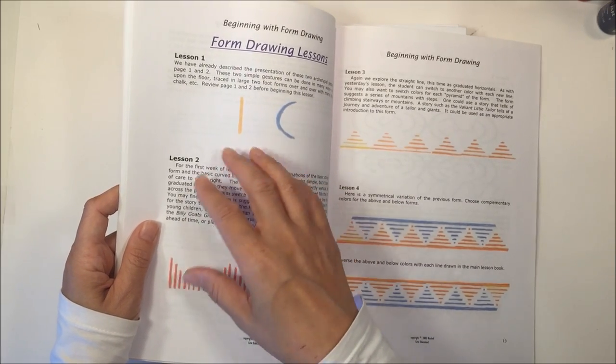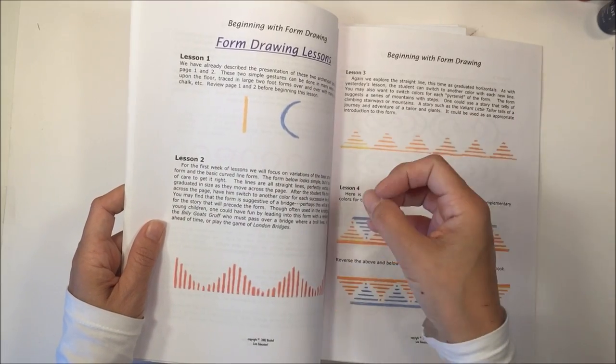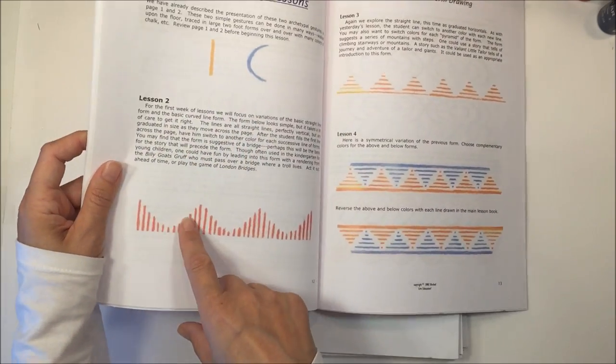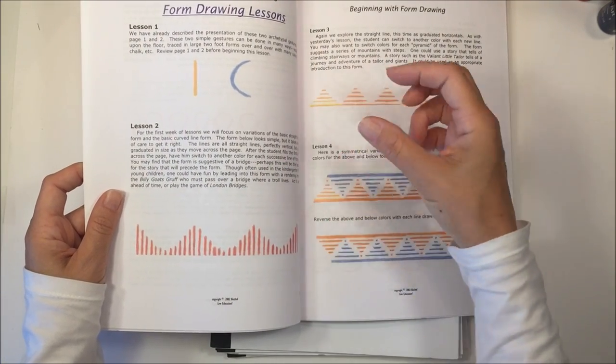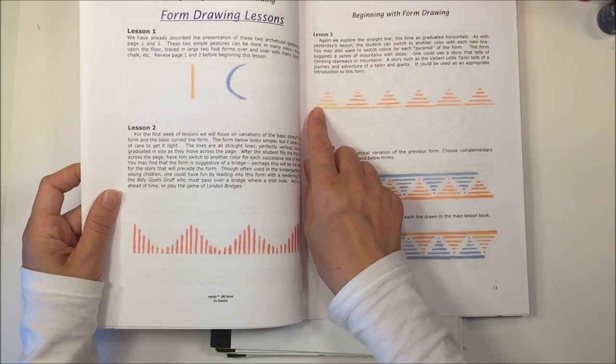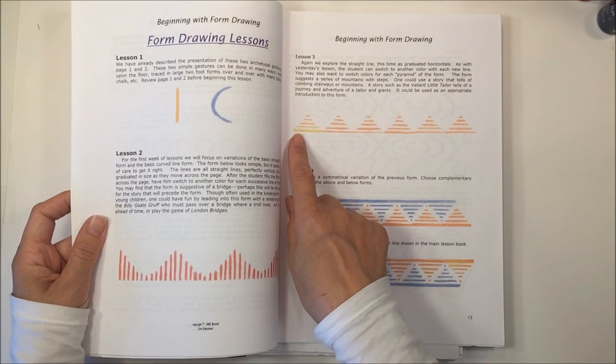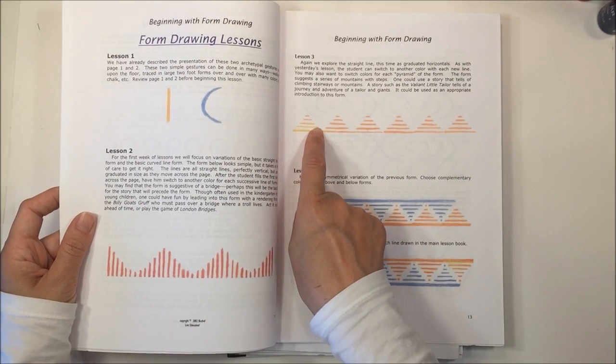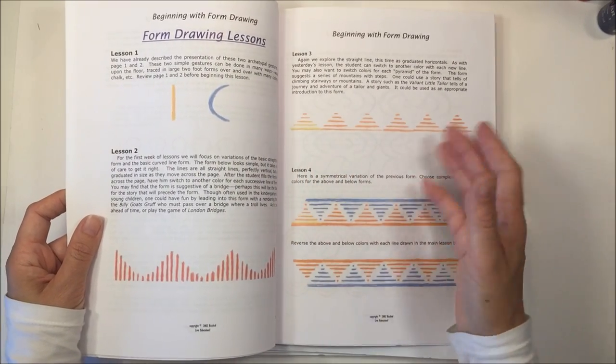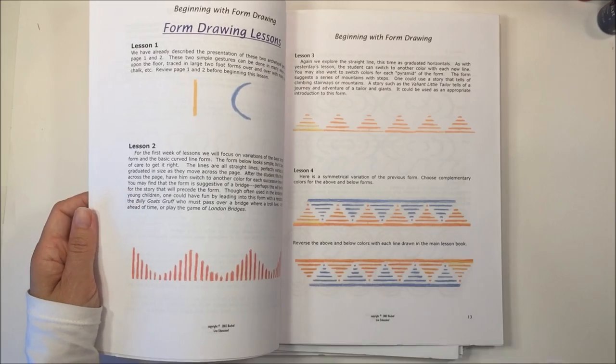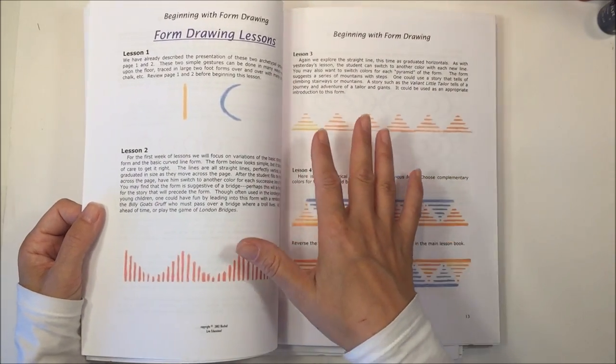Once you master straight and curved, you can draw anything because everything is a combination of straight and curved lines. There are all these different exercises that go through practicing doing straight and curved lines. Though they look simple, this can be a little bit challenging for a child to be able to space these out to make the second line a little bit shorter than the first line and so on. That kind of symmetry is a skill that the child is going to continue to learn and perfect.